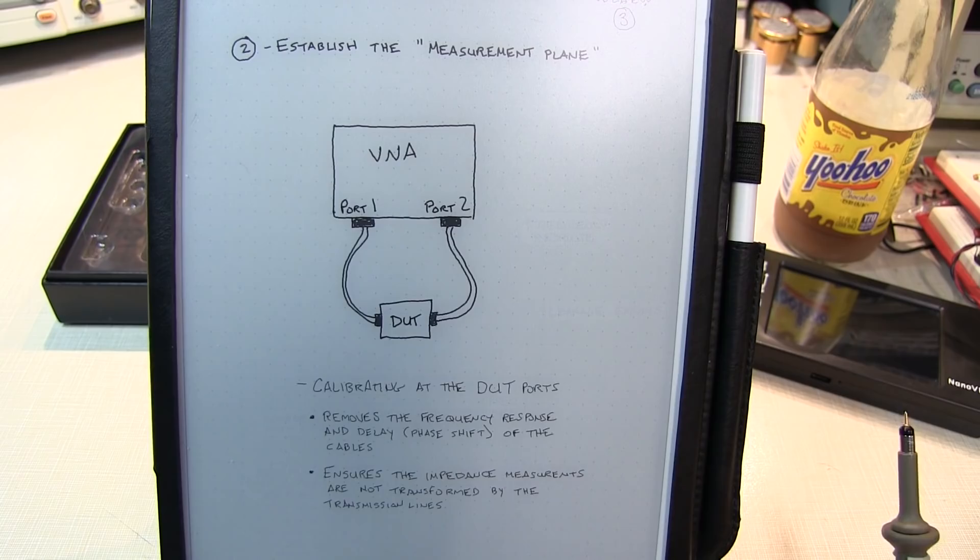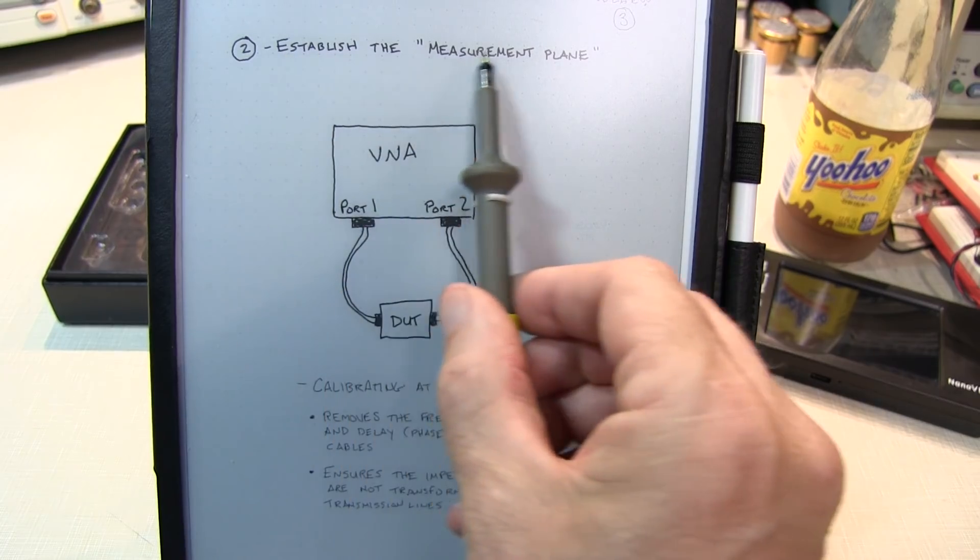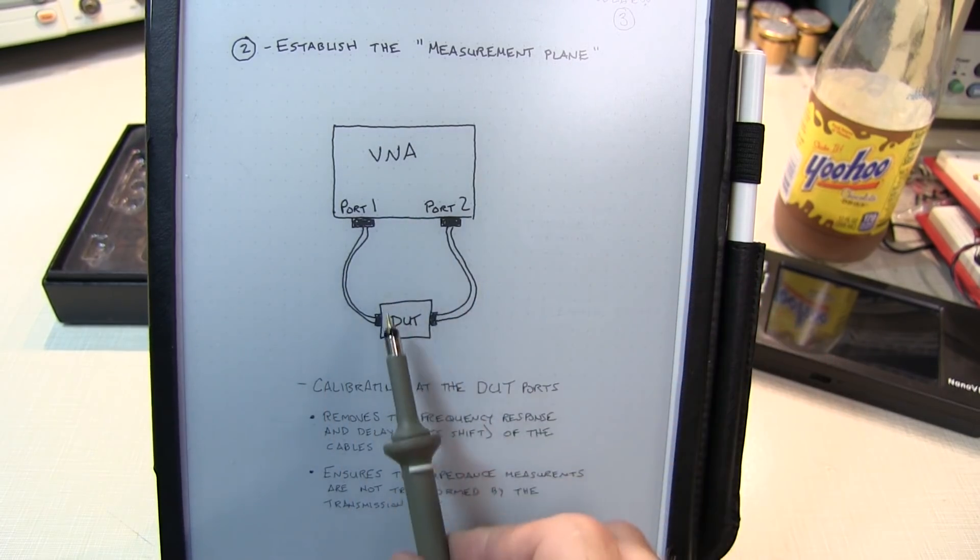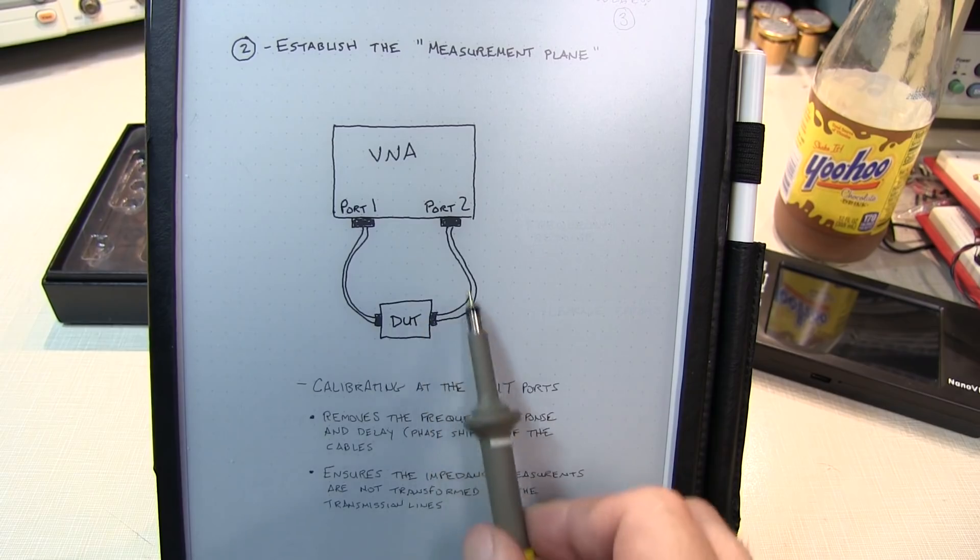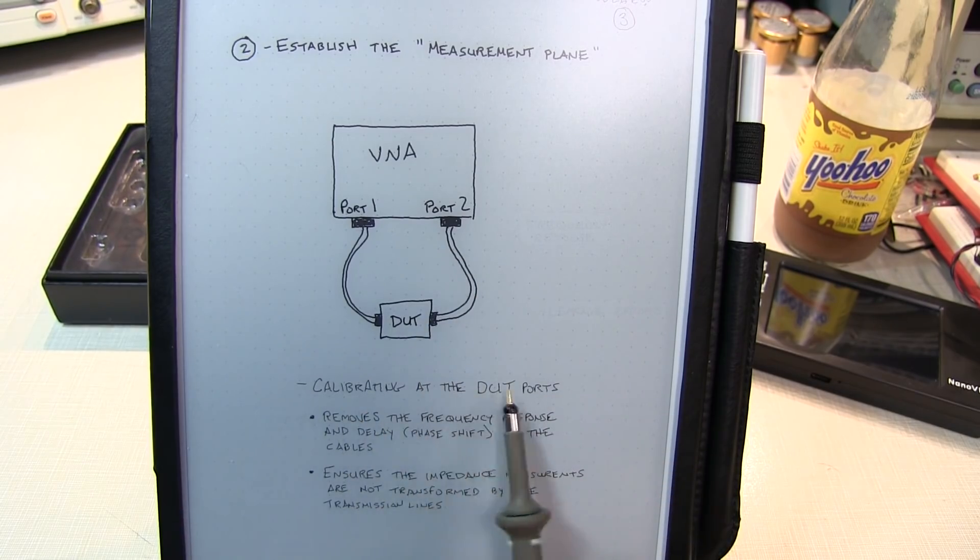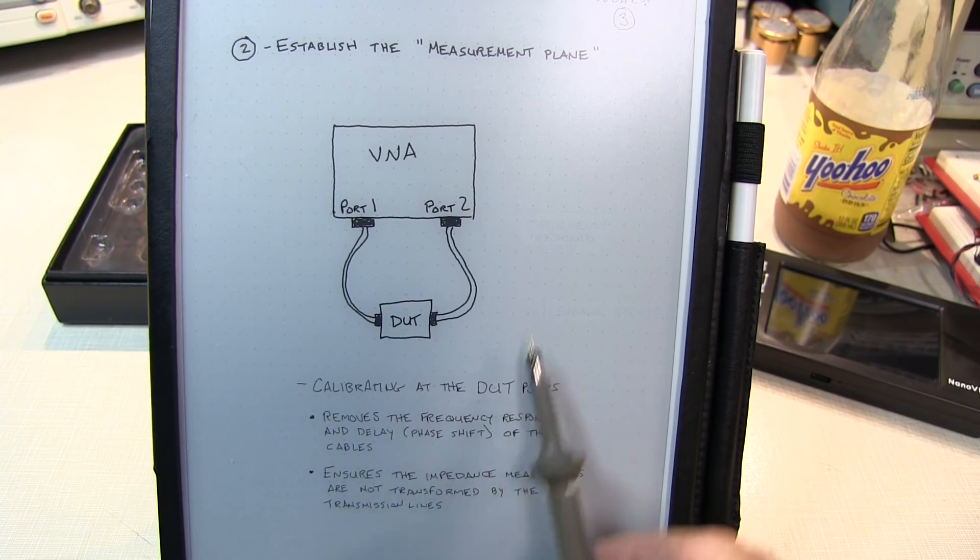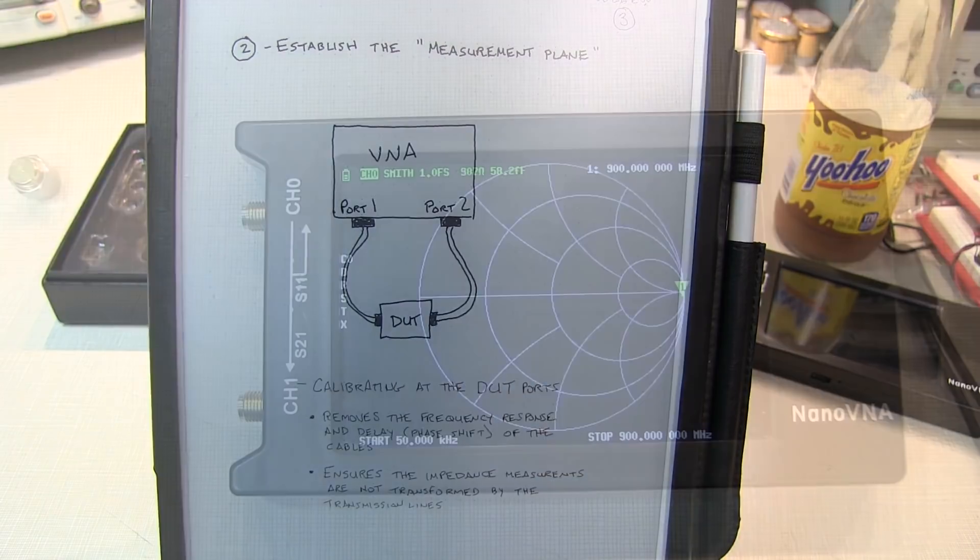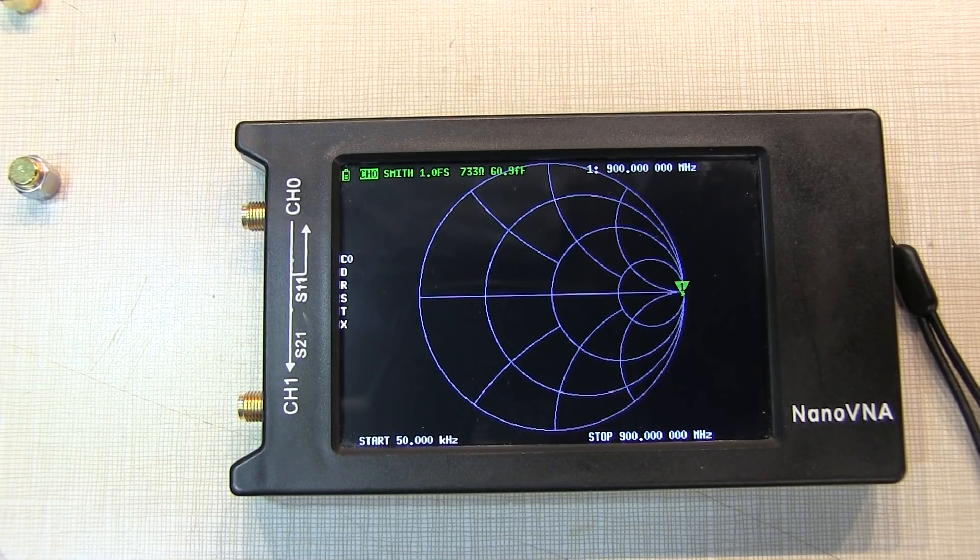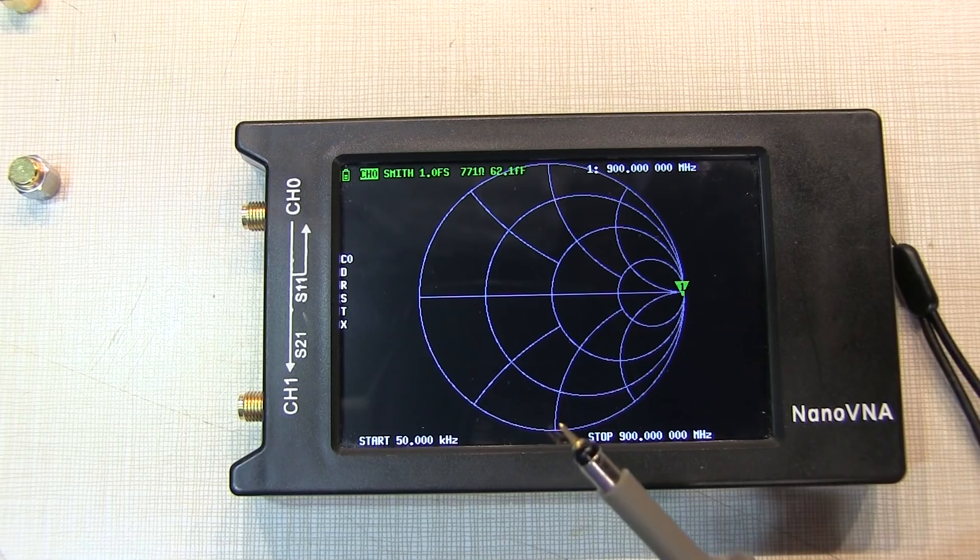Now the other important job of the user calibration is to establish the measurement plane or calibration plane, so that when we're measuring a DUT, we're measuring the terminal properties of the DUT and not being transformed by the interconnect to the DUT. So we do the calibration right at these DUT ports or as close as possible. And this removes the frequency response and delay or phase shift of the cables and ensures that the impedance measurements are not being transformed by those interconnect cables. Now the importance or the effect of that measurement plane can be shown very easily here with just using a Smith chart.